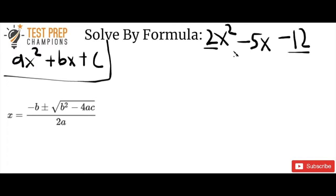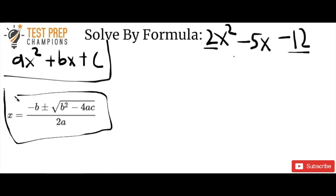There's the factoring method, which I showed you in yesterday's video, or you can use the solution to the quadratic equation, aka the quadratic formula, which is what we see down here. x equals the opposite of b plus or minus the square root of b squared minus 4ac, all over 2a. That is your quadratic formula, aka your solution to the quadratic equation. Your quadratic equation is ax squared plus bx plus c. We're going to take 2x squared minus 5x minus 12 and plug it into the quadratic formula to get an answer.